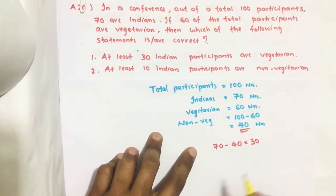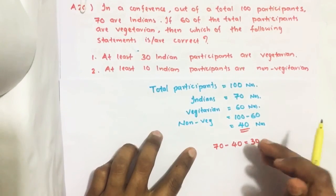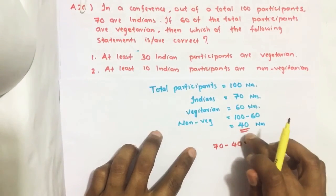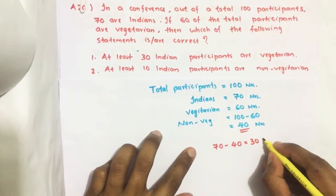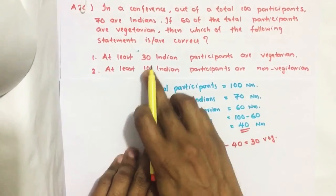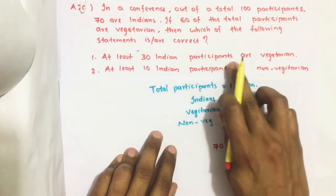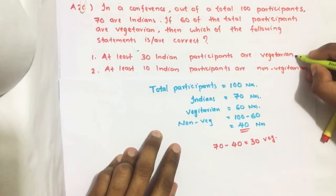That means even if all 40 non-vegetarians are from India, still we have 30 vegetarians here. So at least 30 Indian participants are vegetarian. It is true.